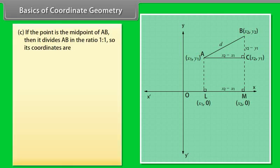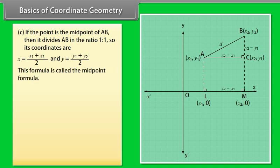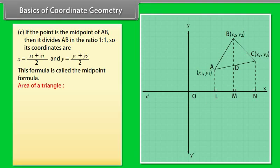If the point is the midpoint of AB, then it divides AB in the ratio 1 to 1. So its coordinates are X equal to (X1 plus X2) by 2, and Y equal to (Y1 plus Y2) by 2. This formula is called the midpoint formula.